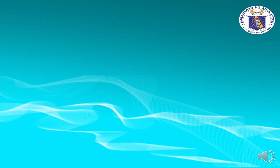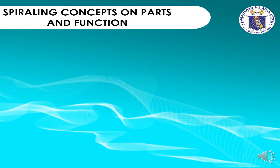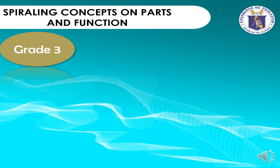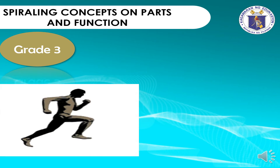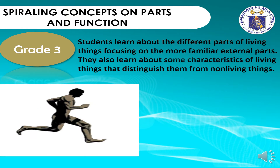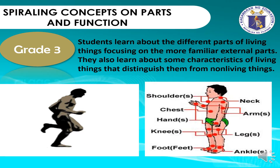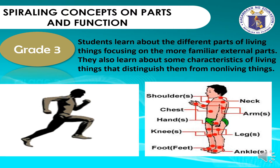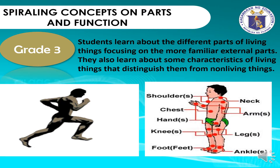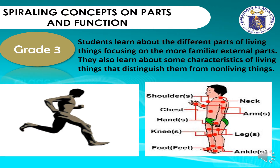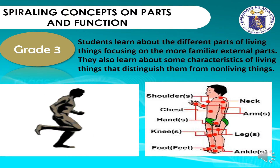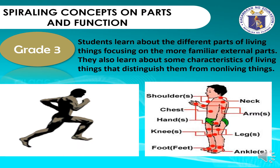The K-12 curriculum emphasizes spiral progression. This time, let us look at the development of concepts on parts and function from grade 3 down to grade 10. For grade 3, the main focus will be on the familiar external parts, and you have also learned about the characteristics of living things that distinguish them from non-living things.